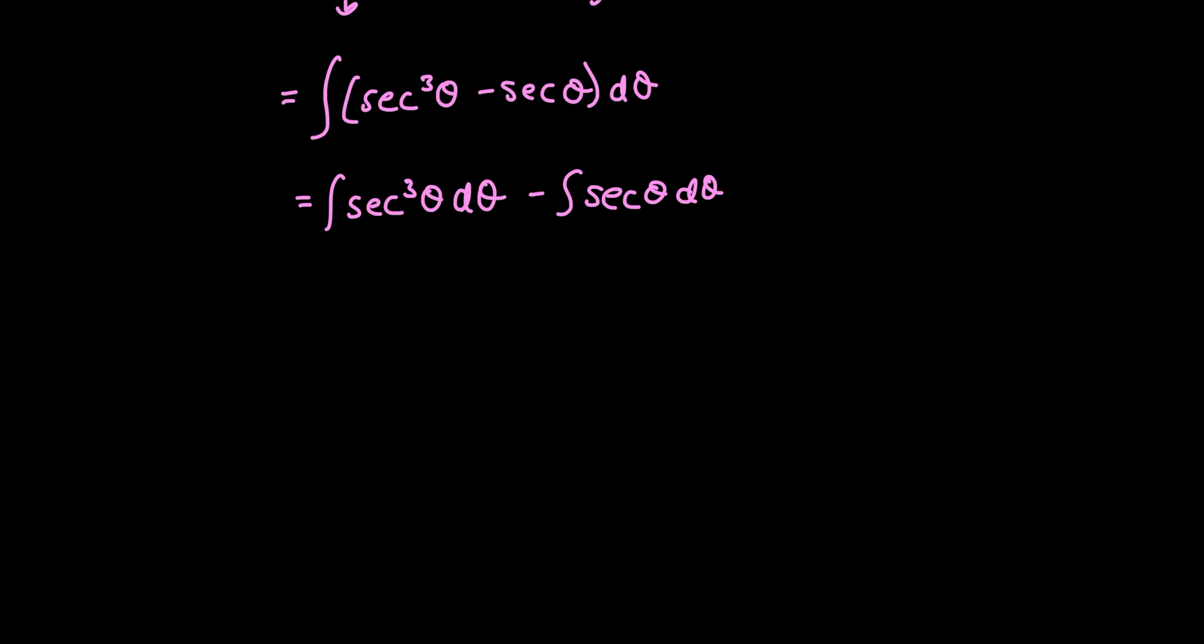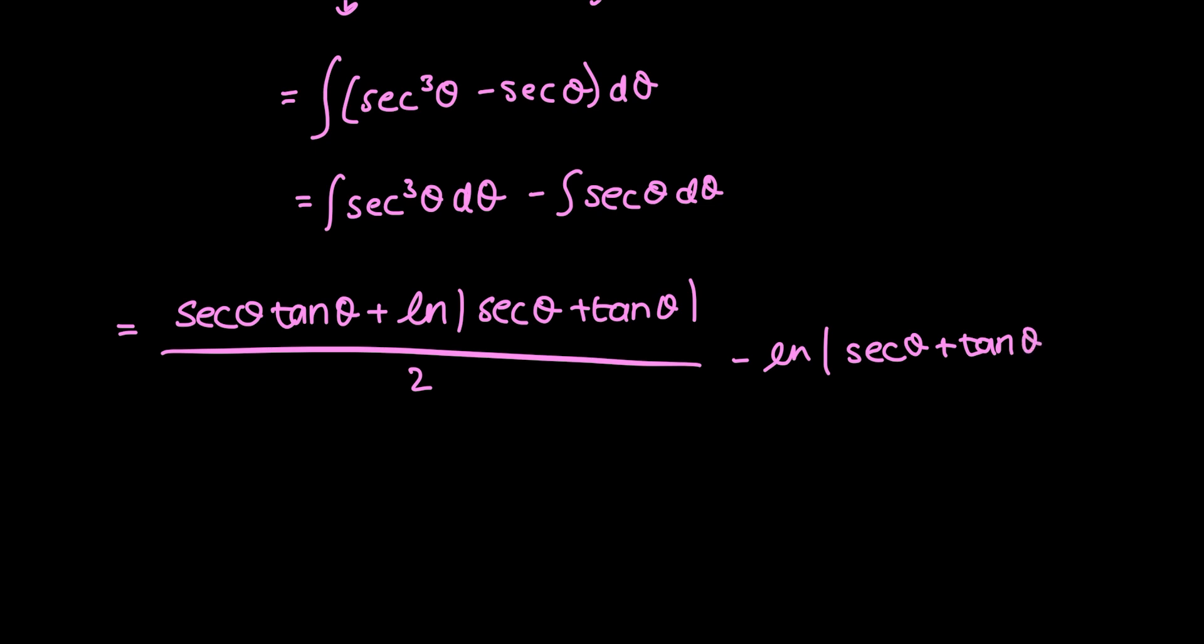And just do the rest of the work. So, the result of the secant cubed theta d theta integral gives me secant theta tan theta plus the natural log of secant theta plus tan theta, all divided by 2. And then, my result from the integral of secant theta is just the natural log of secant theta plus tan theta plus an arbitrary constant C.